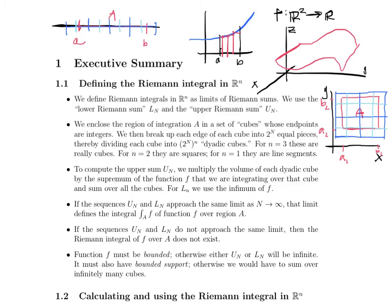For n=3, we have actual physical three-dimensional cubes; for n=2, squares; for n=1, line segments. These are going to be our sub-intervals over which we take the upper and lower Riemann sums. When we write U sub N, that means the upper Riemann sum over the level of dyadic division N. Note there is a slight typo — that should be a big N — which will be fixed in the notes posted to the course website.